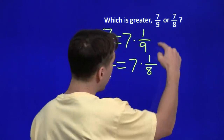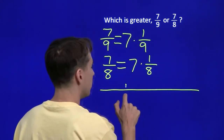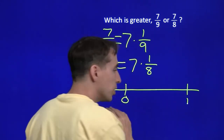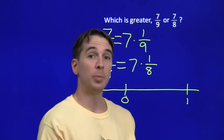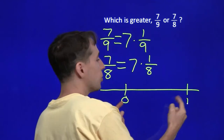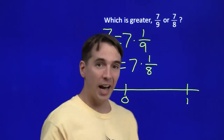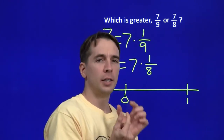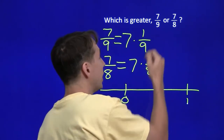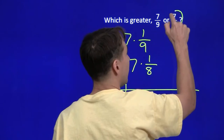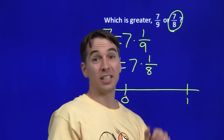So now we just have to compare one-ninth and one-eighth. We can think about the number line — to find one-eighth, we split the segment between 0 and 1 into eight equal pieces; for one-ninth, we split it into nine pieces. Nine pieces are going to be smaller than eight pieces, so one-eighth is greater than one-ninth, which tells us that seven-eighths is greater than seven-ninths.